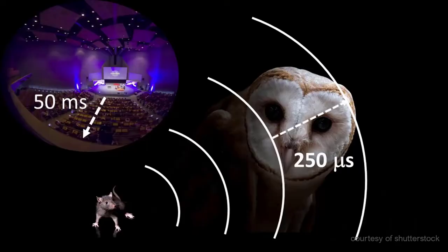And because the head of a barn owl is much smaller, it only takes 250 microseconds to travel from one ear to the other. That is shorter than a blink of an eye.